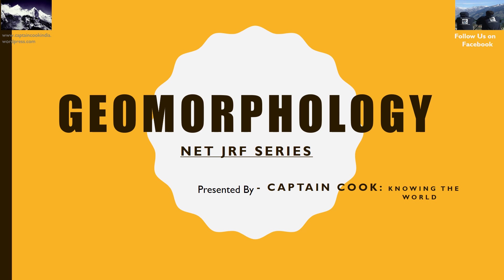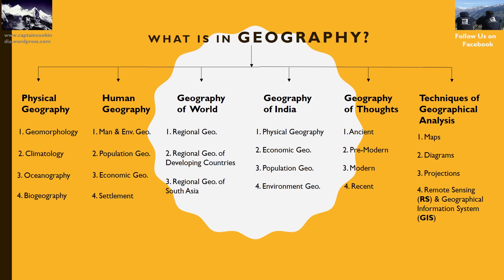Before starting the lecture on geomorphology, I want to tell you what all subjects come under geography. Geography includes six main sub-branches: physical geography, human geography, geography of the world, geography of India, geography of thoughts, and techniques of geographical analysis. The rest are sub-branches of these main subjects.